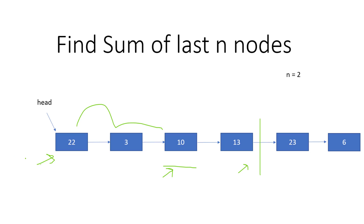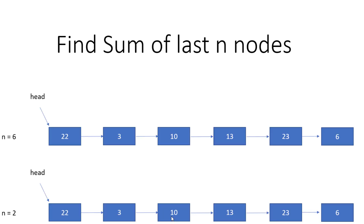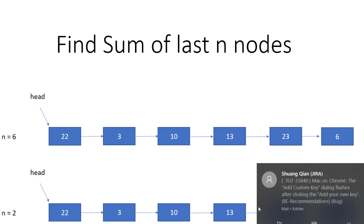Now let's see what negative test cases we need to handle. There can be a case when head equals null — in this case we simply return 0 or minus 1 because this is not a valid case. Then we can have the case when N is greater than the number of nodes, where we return minus 1. And when N equals the number of nodes — like 6 nodes and N is 6 — we check when it reaches the end and both conditions are satisfied.